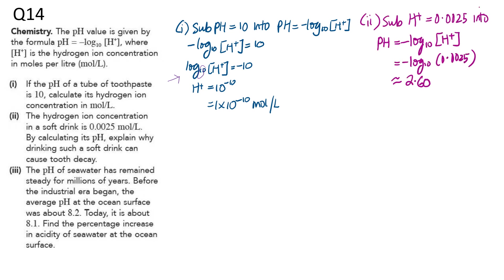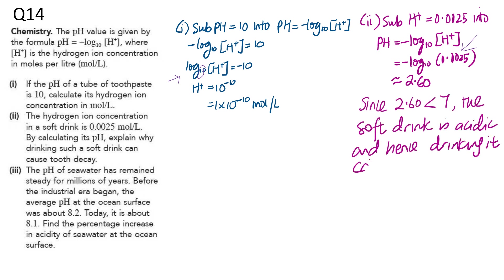For part two, you are given the hydrogen ion concentration and need to find the pH level. Substitute the hydrogen ion concentration into the formula, use your calculator, and you get 2.60. Since 2.60 is less than 7, the soft drink is acidic. It is advisable not to drink too much soft drink because it may cause tooth decay, which may explain why some people suffer from it. You should cut out soft drinks.